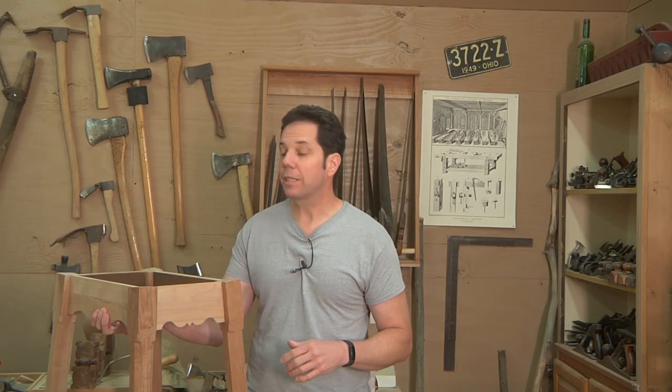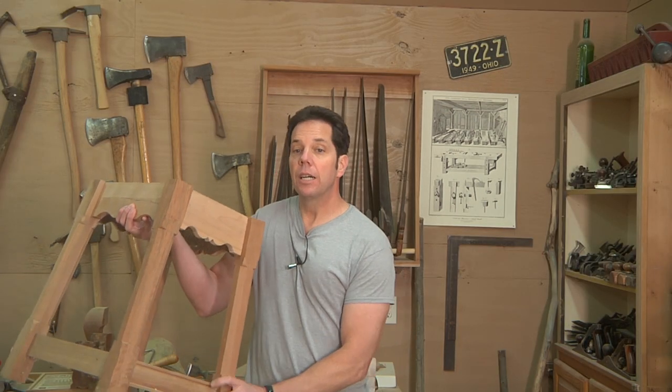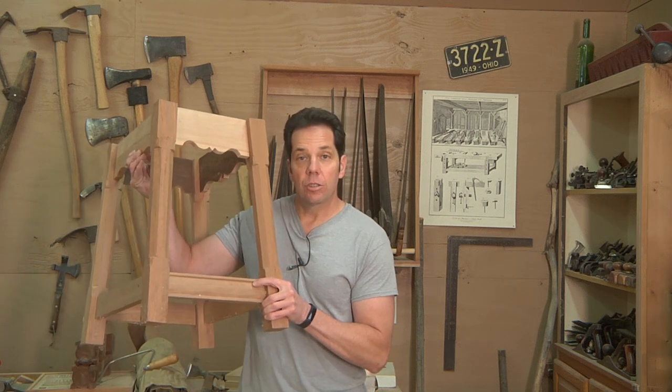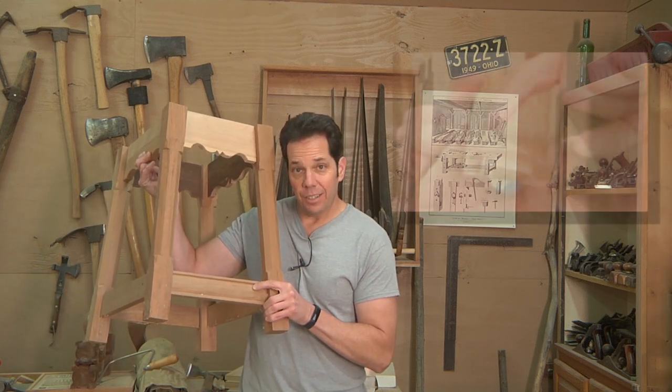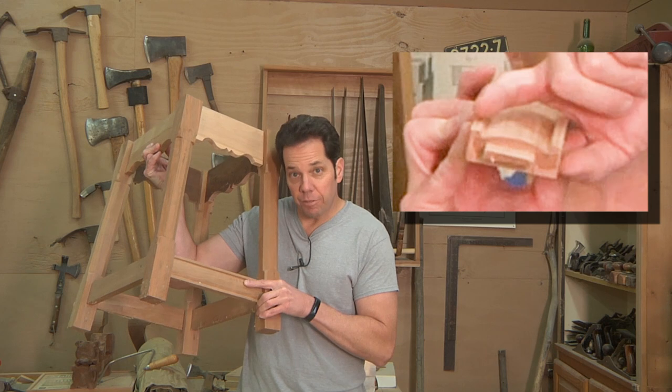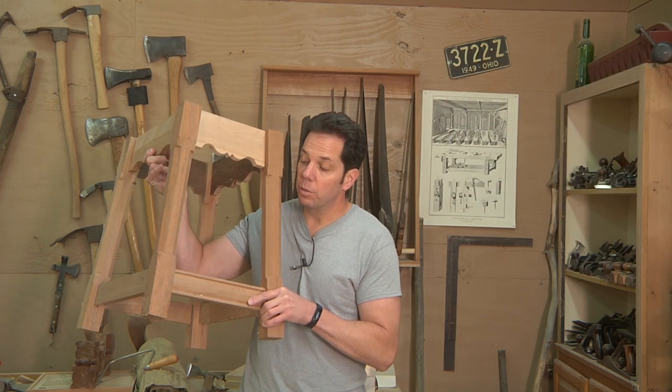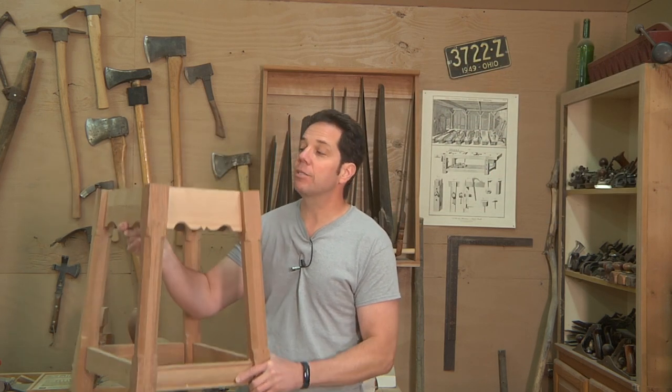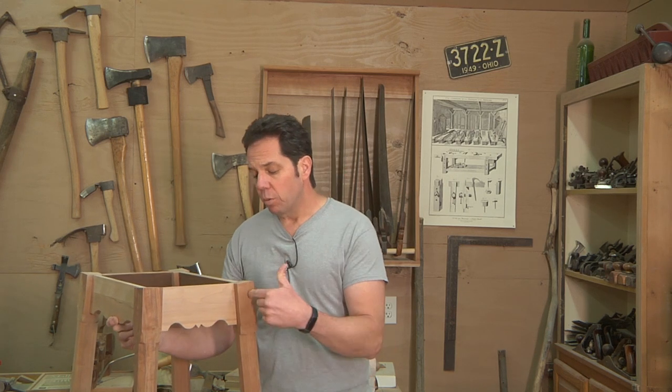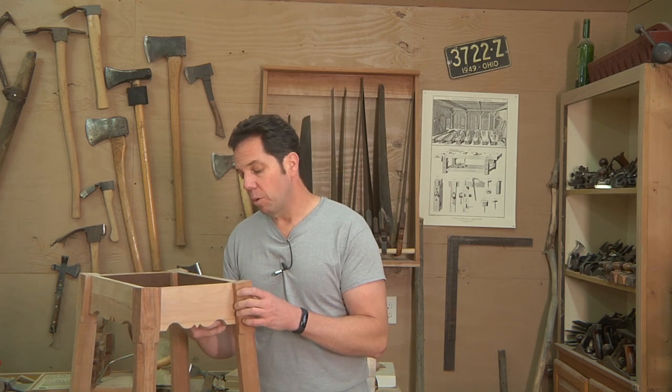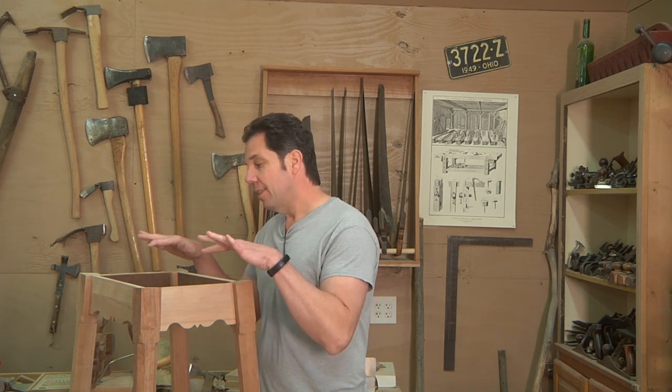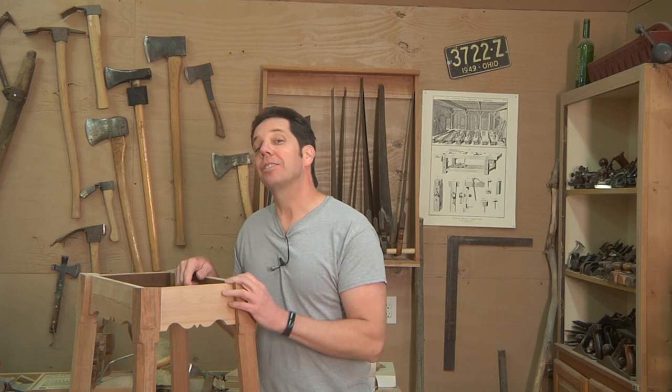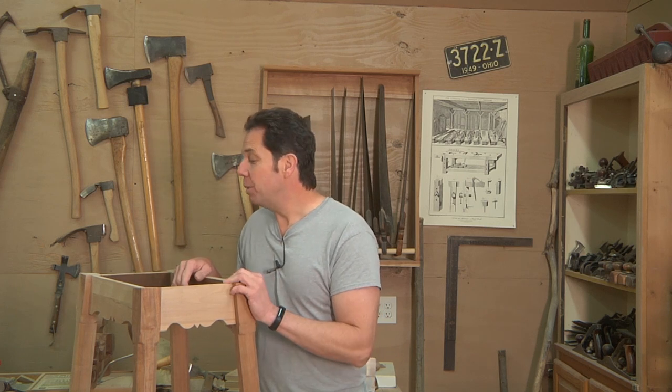And continuing going forward with the series on the joint stool, I'll be showing you this lower stretcher down here. It has a nice little curved profile. I'll show you how we'll make and shape that out. And then as the video keeps progressing we'll do some draw boring of the mortise and tenon joints here and then the top, some finish, and she'll be done. So stay tuned for that. Again, it's being all done with just hand tools.